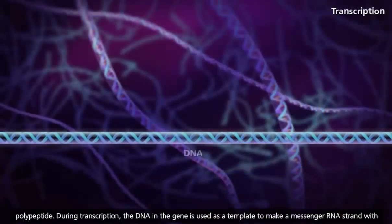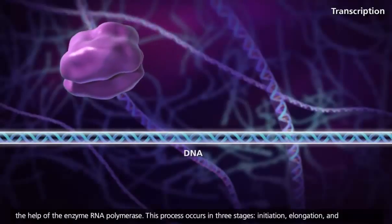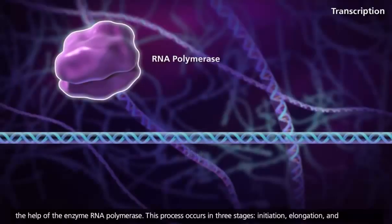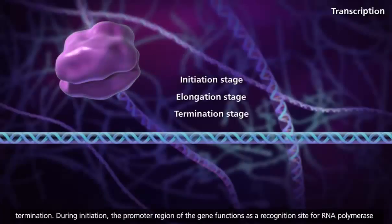During transcription, the DNA in the gene is used as a template to make a messenger RNA strand with the help of the enzyme RNA polymerase. This process occurs in three stages: initiation, elongation, and termination.